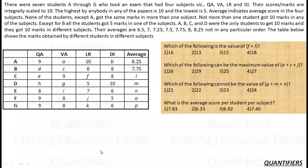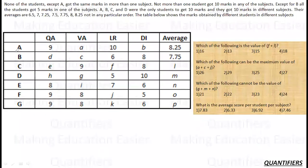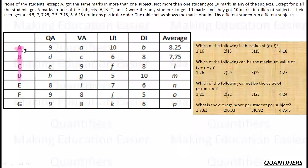So what do we know? A, B, C, D all received 10 in different subjects, and we derived that C has 10 in VA and D has 10 in DI. We cannot give A another 10 because that would mean two students share 10 in the same subject. One 10 is in VA, one 10 is in QA — because they have to be in different subjects.